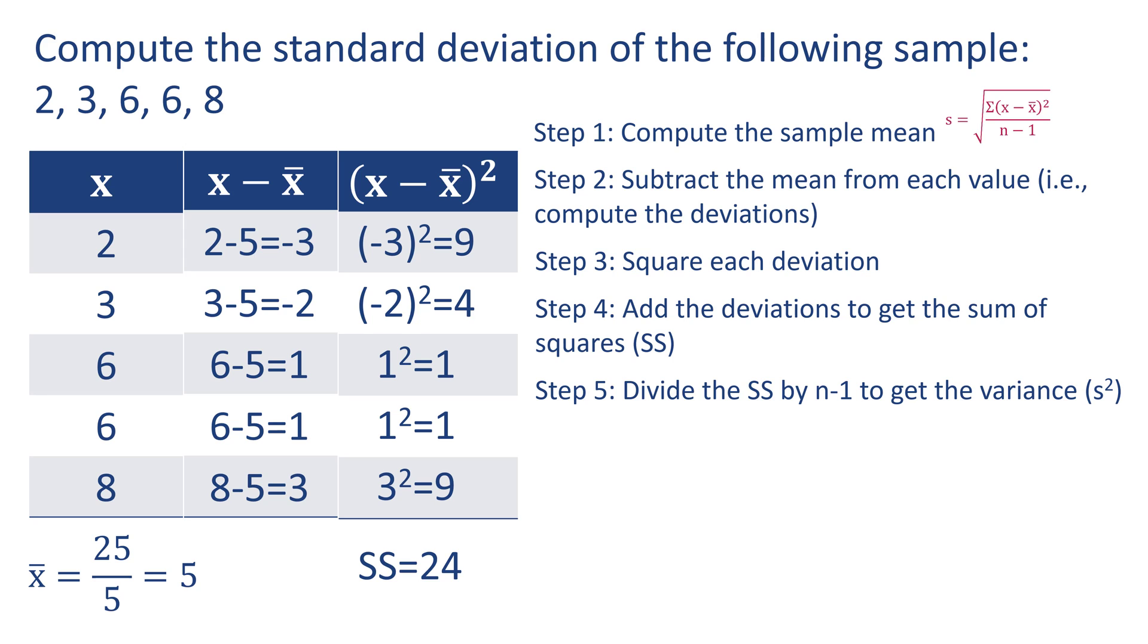Step 5: divide the sum of squares by n minus 1 to get the variance, which is symbolized as s squared. Our sum of squares was 24, and there were 5 observations. The variance equals 24 divided by 5 minus 1. We subtract in the denominator. 24 divided by 4 equals 6. This is the variance of this distribution.